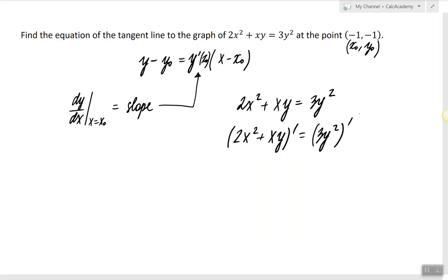Here we just have to keep in mind that y is a function and x is a variable. So we do know what the derivative of x is, but we don't know what the derivative of y is, and we always have to use the chain rule when we have a function of y. So here we have derivative of 2x² plus derivative of xy, and on the right side we have 3 times the derivative of y².